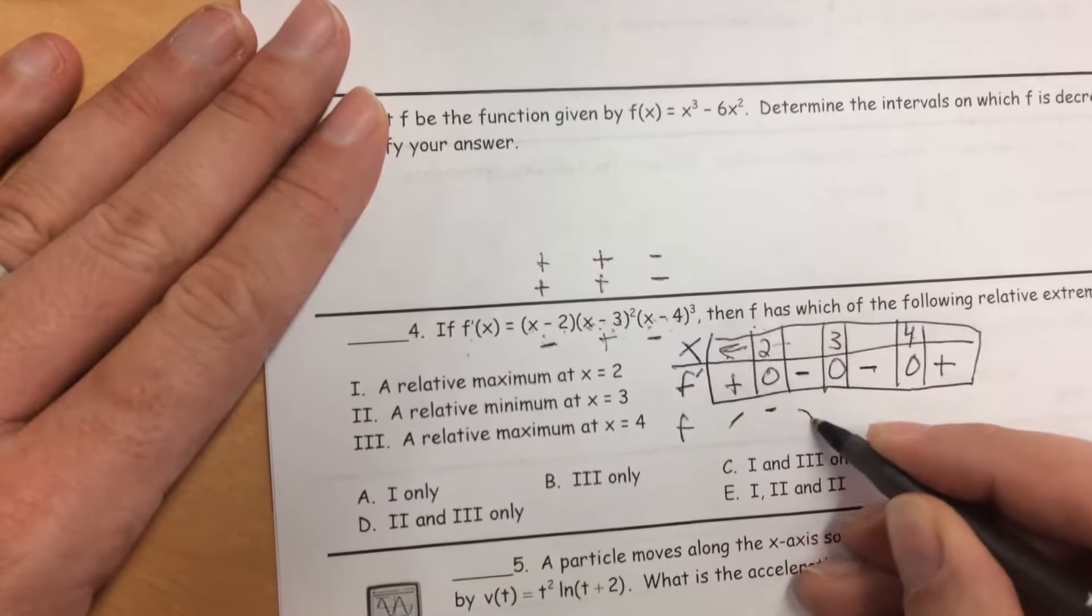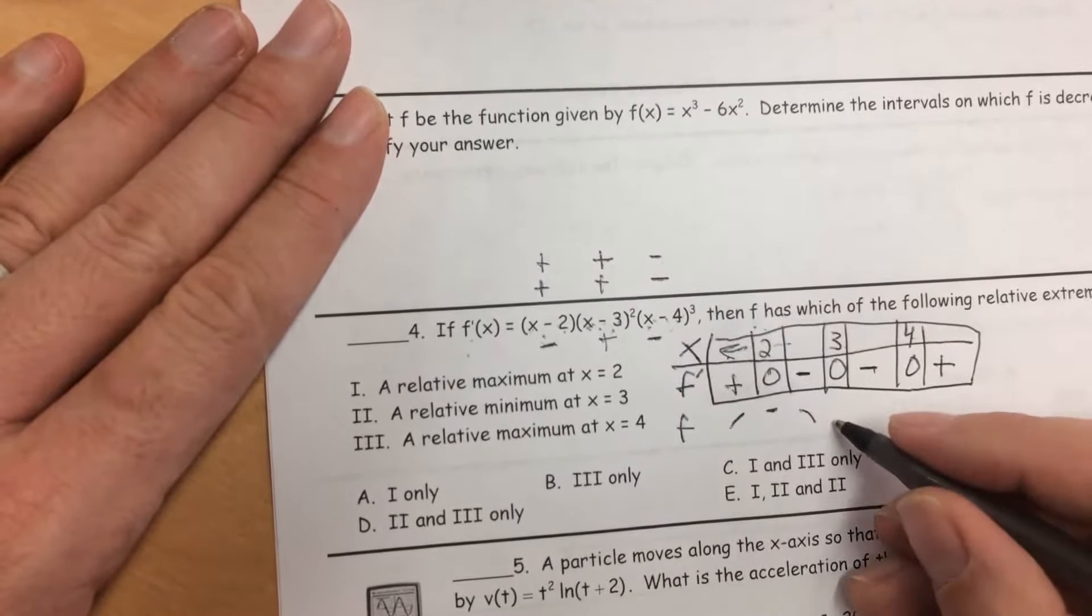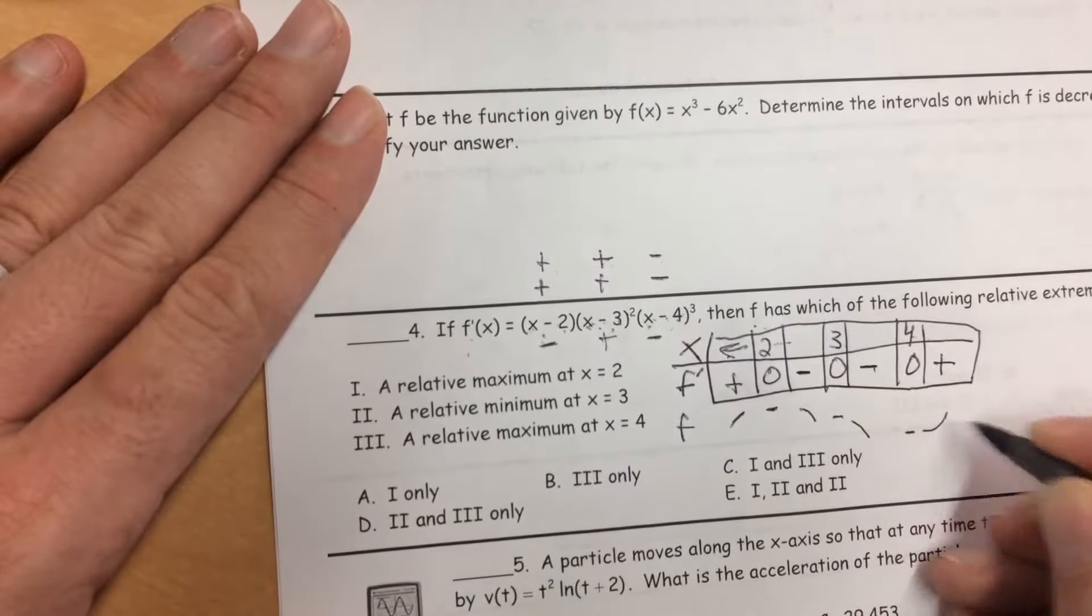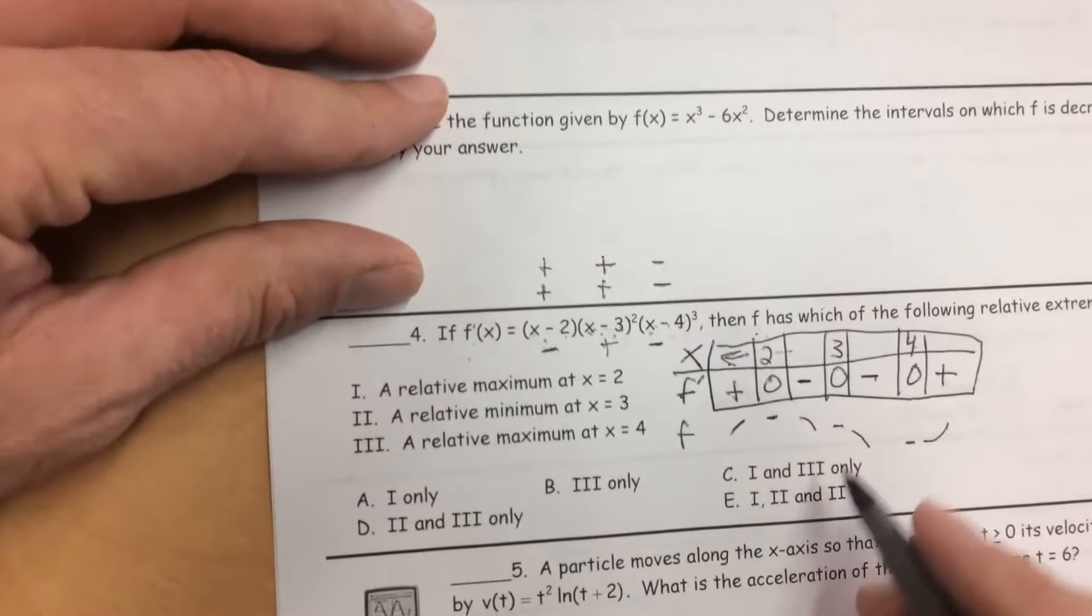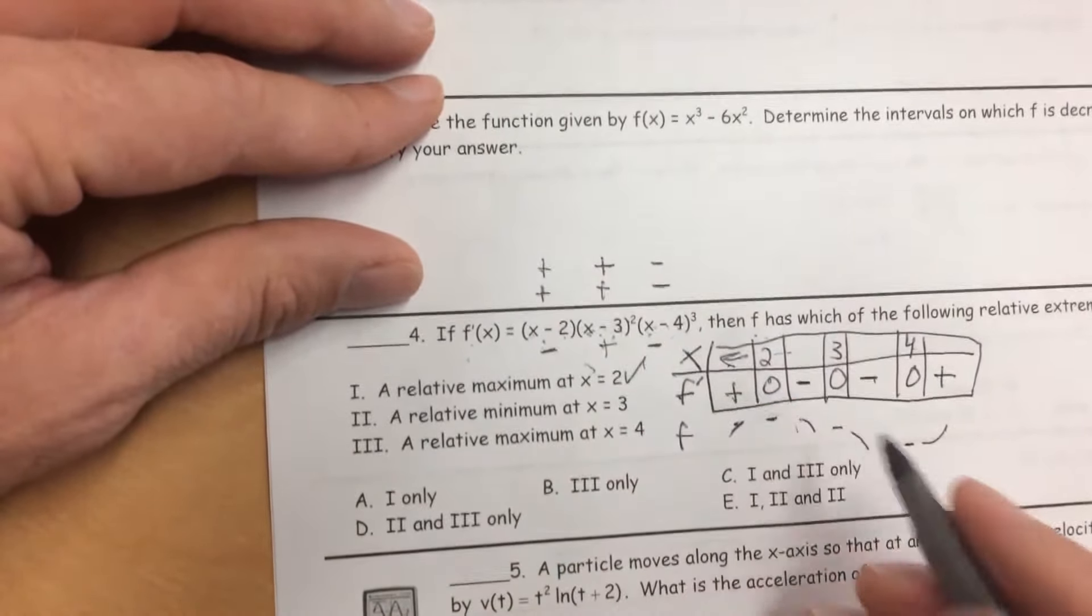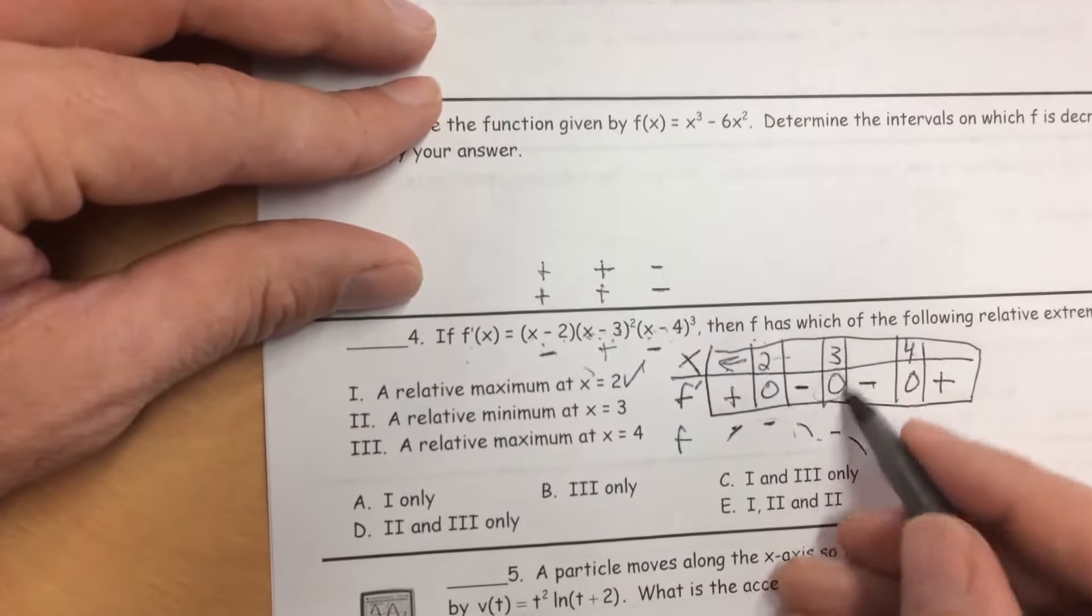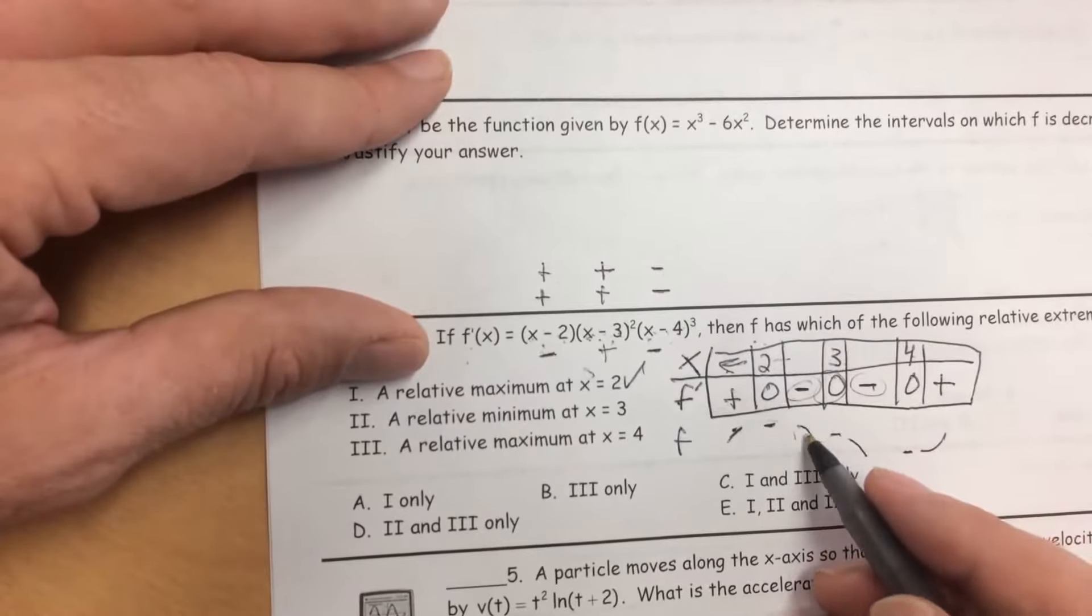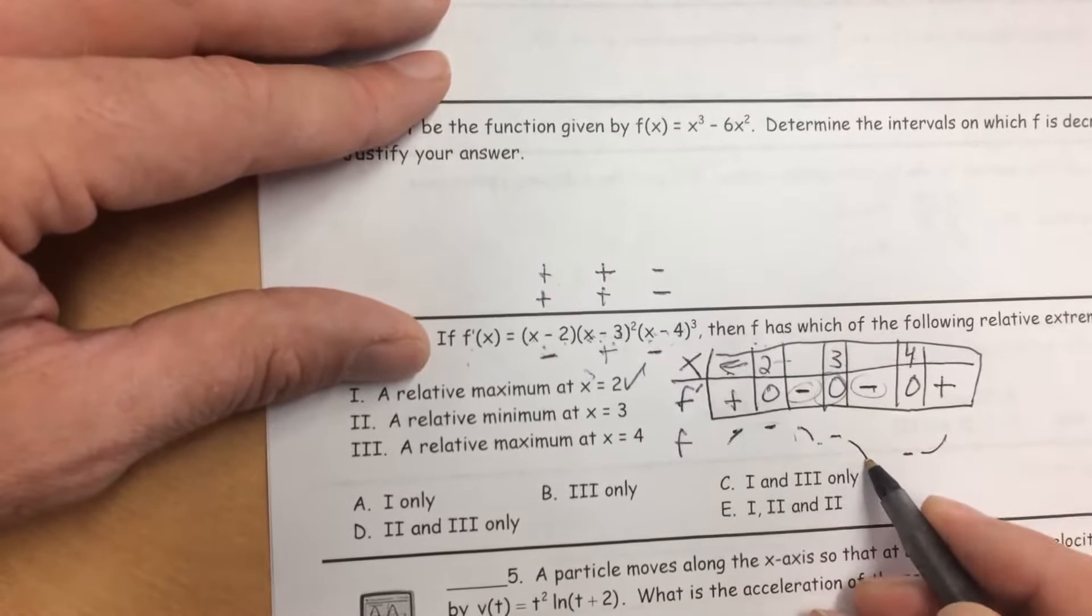So f(x) was increasing and then 0 and then decreasing. Then 0 and then still decreasing. Then 0 and then increasing. So we can kind of see what's going on here. f has a relative maximum at x equals 2. That's great. f does not have a relative minimum at x equals 3 because the sign doesn't change. The sign of f' doesn't change. f was decreasing and then continued to decrease. That is not correct.